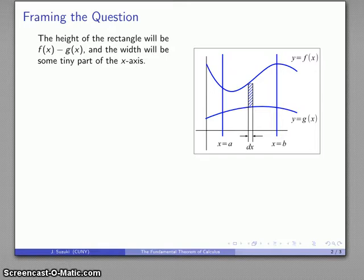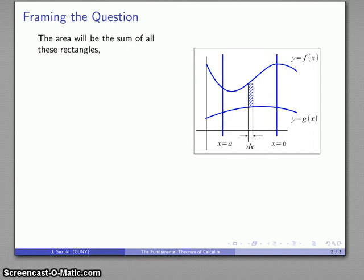That's just going to be the product of the height, f of x minus g of x, and the width, dx, and that's going to be the area of this one little rectangle. If I want the area of the entire region, I can find that by summing all of those rectangles, and I can express that sum as follows, and this gives me something that we call the definite integral.